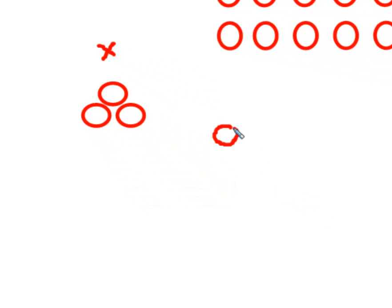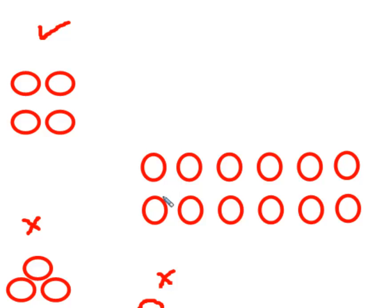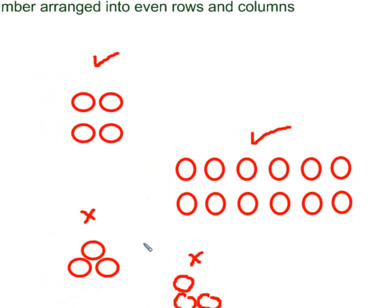Down here, the number 3 has not been put into even rows and columns, so this is not an array. It will also not be an array if we have something like this — even though it appears to be in rows and columns, it is not even, so that would not be an array. Over here, even rows and columns, so that is an array.